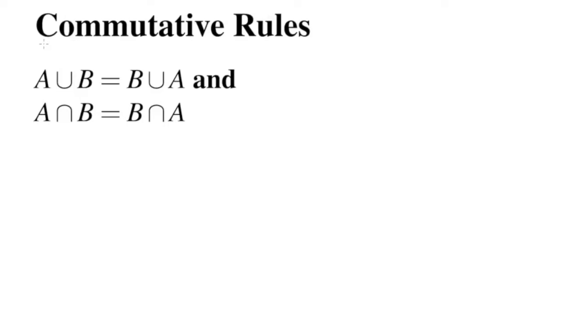Hi everyone, welcome back to the channel. It's absolutely freezing today - well, freezing by my Australian standards at least - so perfect weather for some set theory. I've got my hoodie on, a little warmer now. Today what I want to talk about is set identities. These are special rules which tell us when two sets are equivalent. They're not too complicated and pretty easy to remember, so let's go through a few examples.